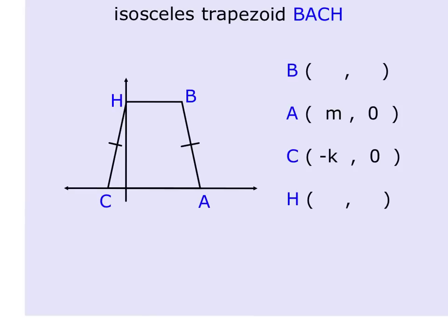In isosceles trapezoid BACH, we're doing a similar thing to what we did in the last problem. First I'm going to notice that from (0, 0) out to here is m units, because that's the point (m, 0).